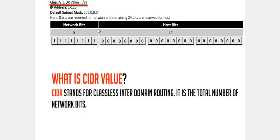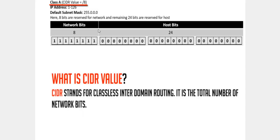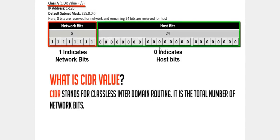Based on the CIDR value, we can identify network bits and host bits. The 1s indicate network bits and 0s indicate host bits. For Class B with slash 16, the first 16 bits are network bits and the next 16 bits are host bits.